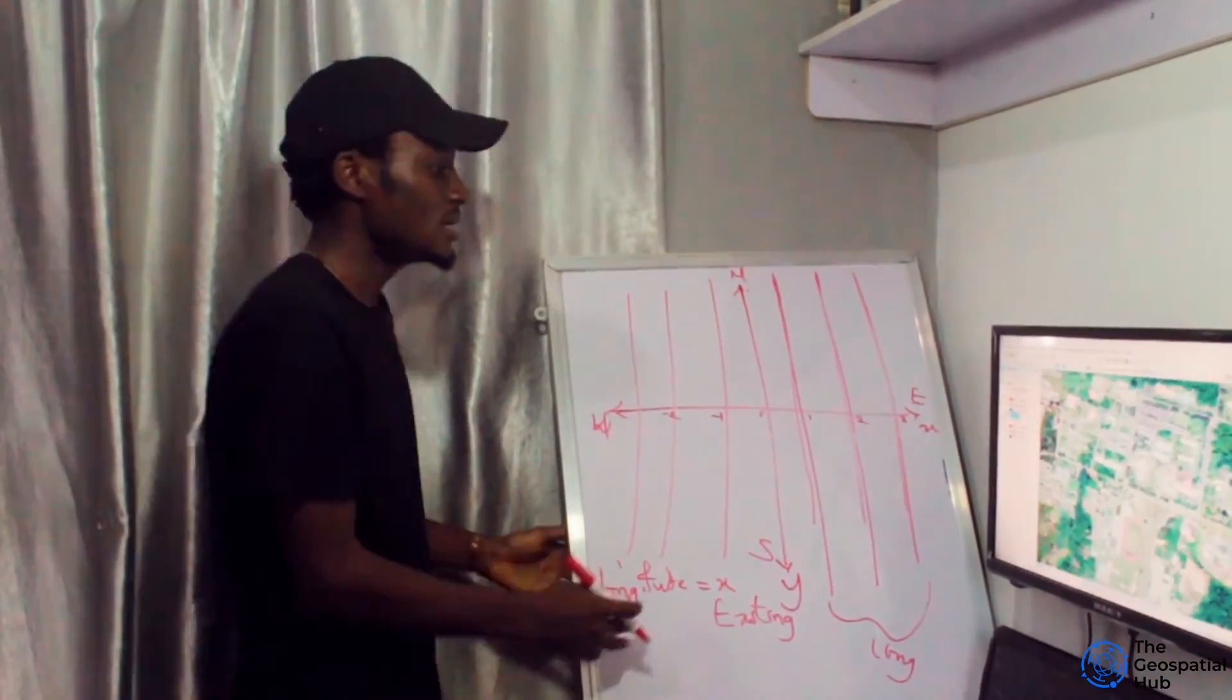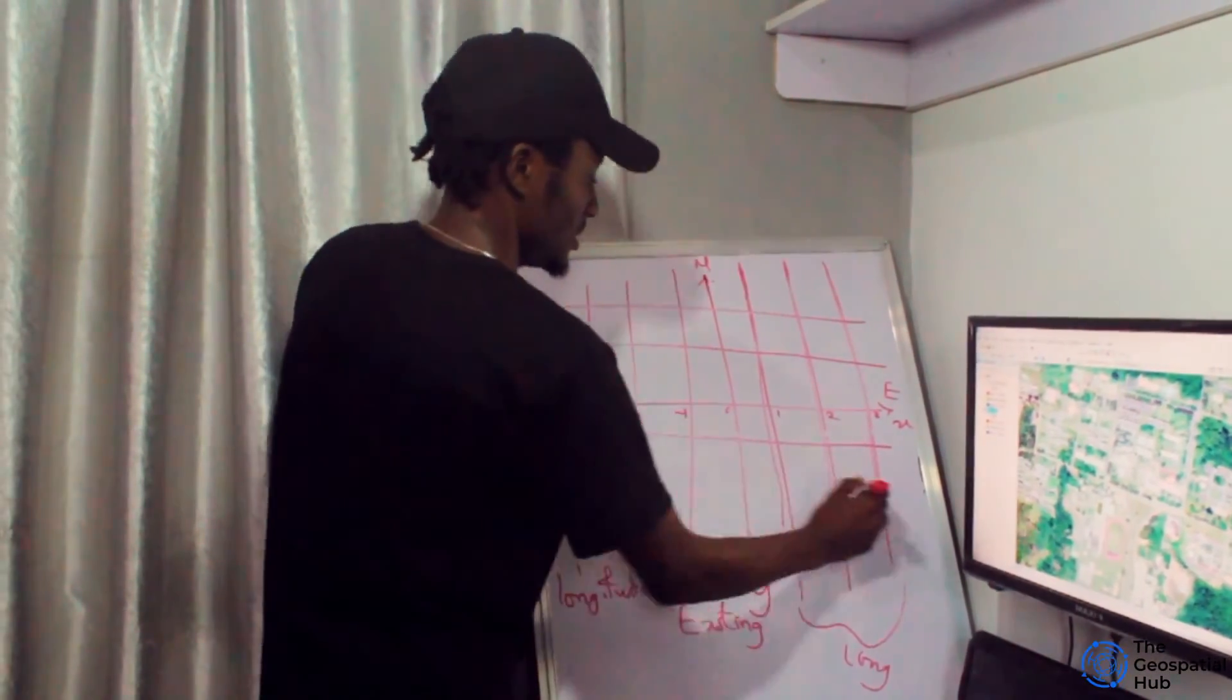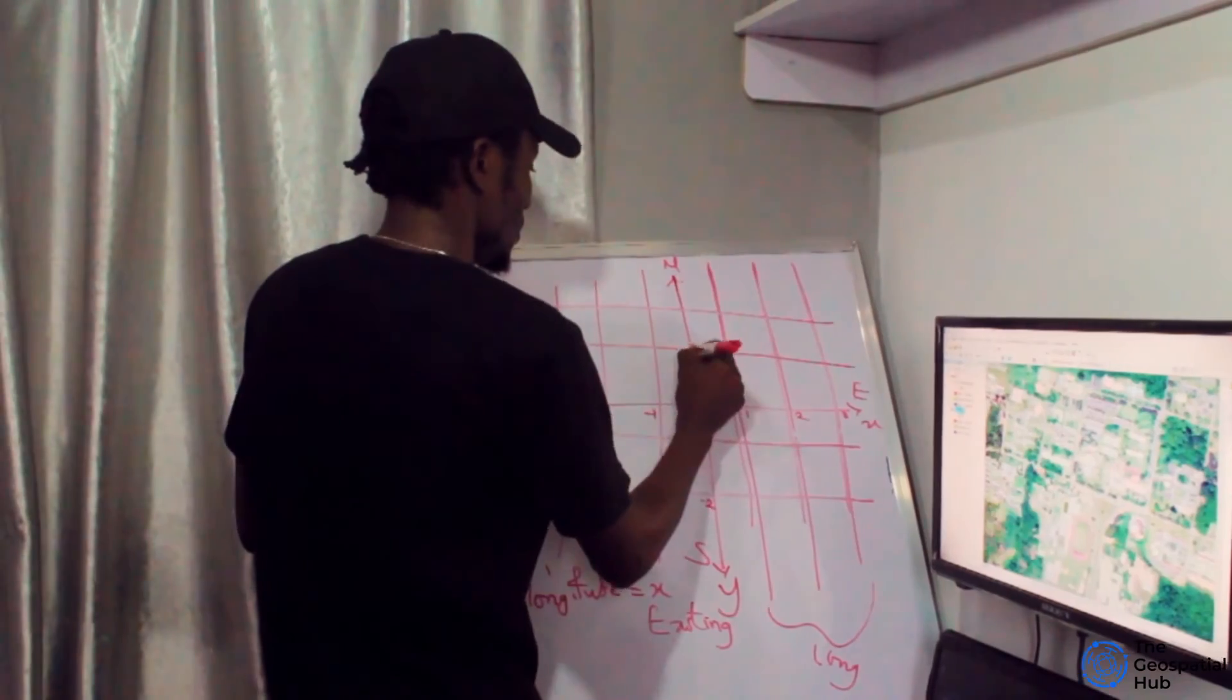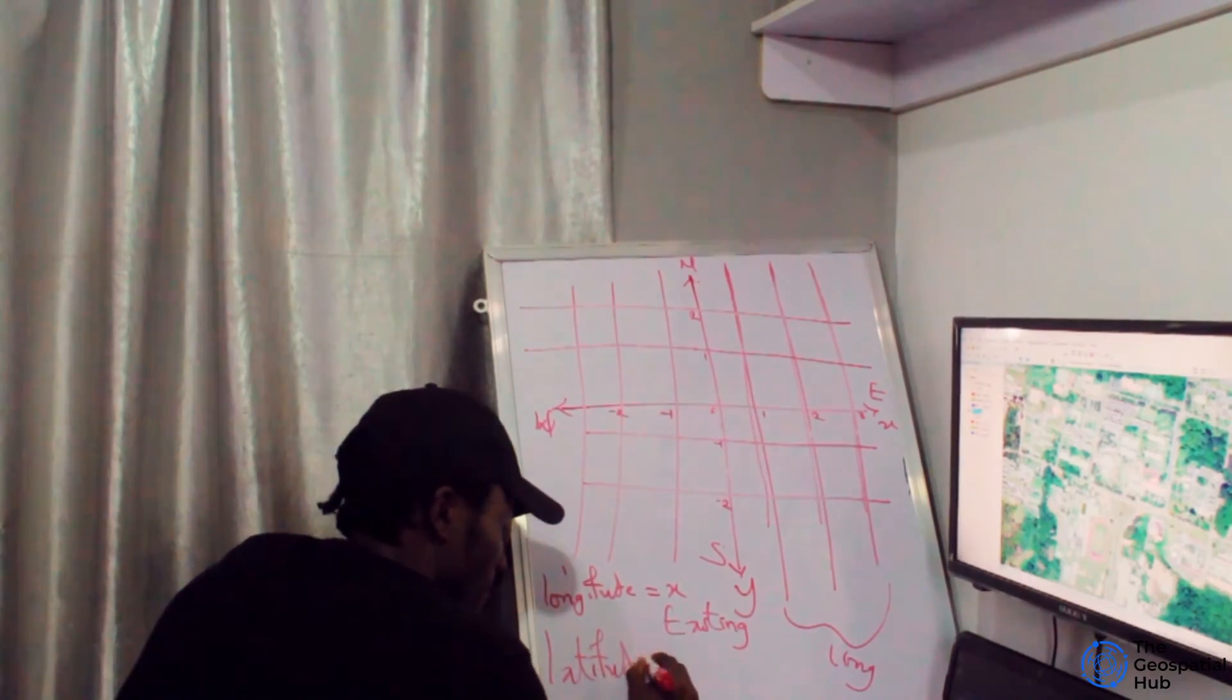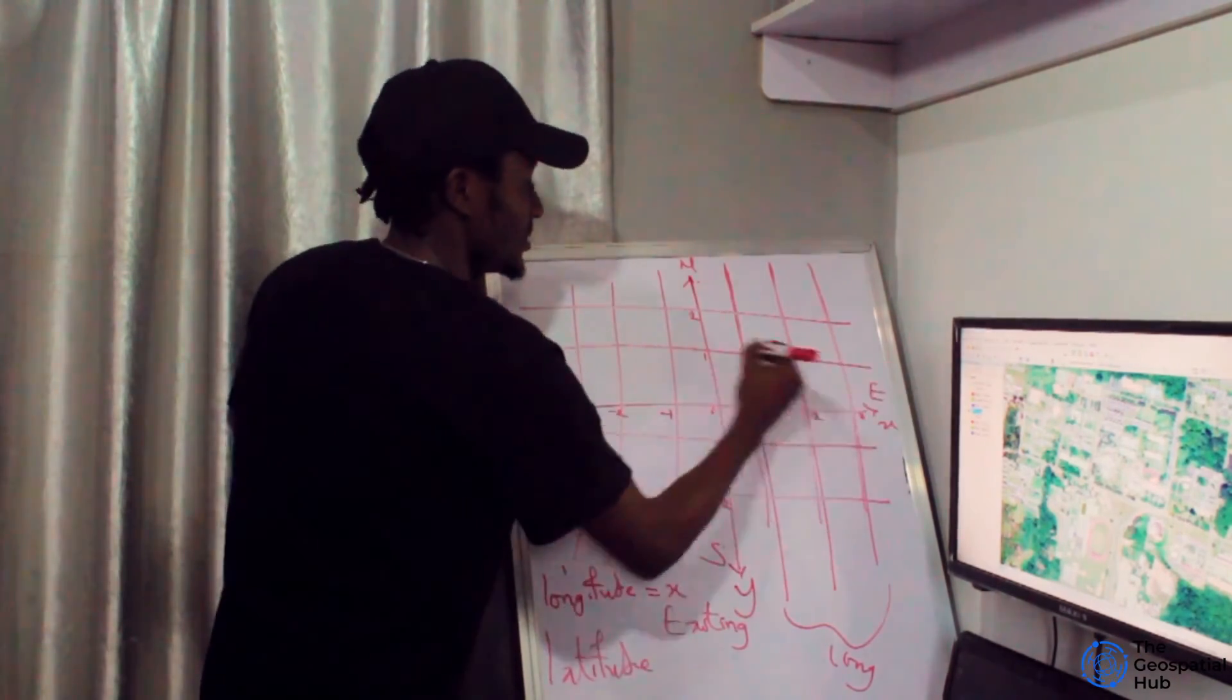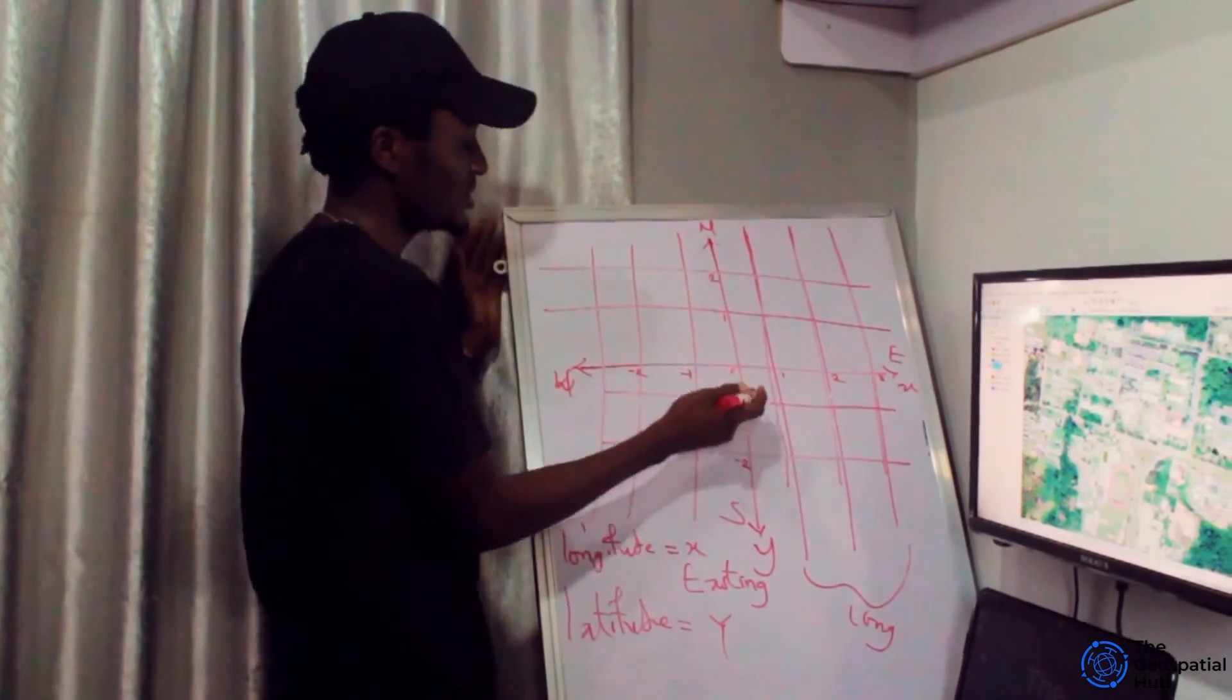Now we have our latitude. These are lines of latitude. Looking at these latitude lines, I read this as minus one, minus two, and this is one, this is two. We're reading this latitude on the Y axis. So our latitude is our Y, and we're reading it towards the north or the south, which is why we call it northings.